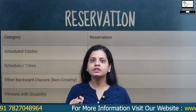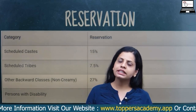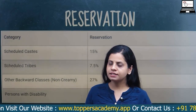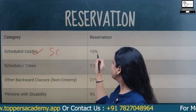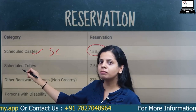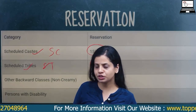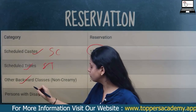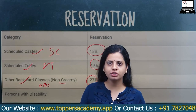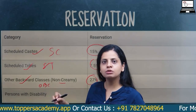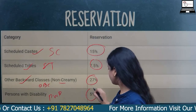Let's look at the reservation criteria. Scheduled Caste (SC) candidates have 15% reservation. Scheduled Tribe (ST) candidates have 7.5% reservation. Other Backward Classes (OBC), non-creamy layer, have 27% reservation. Persons with Disability (PWD) have 5% reservation.